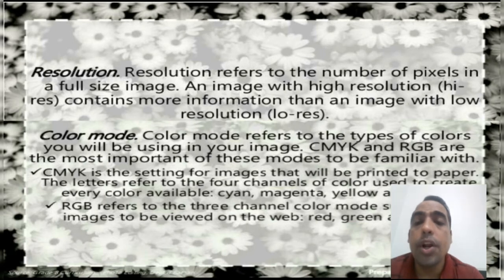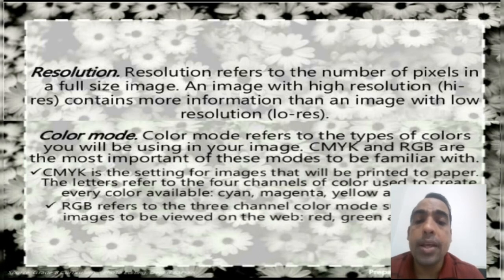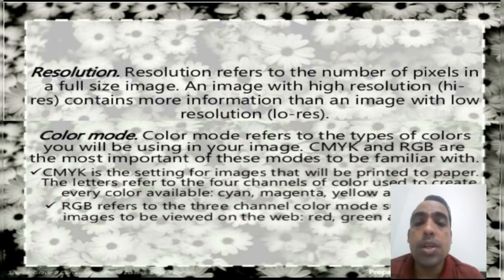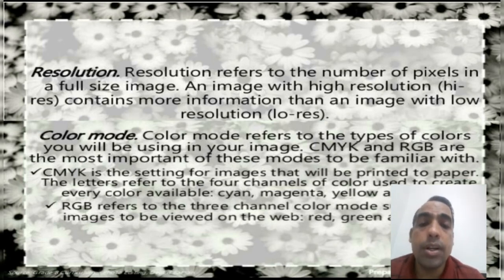Now I'll explain you what is resolution and what is color mode. Resolution refers to the number of pixels in a full size image. An image with high resolution contains more information than an image with low resolution. Color mode refers to the types of color you will be using in your image. CMYK and RGB are the most important of these modes. CMYK is the setting for images that will be printed to paper. The letters refer to the 4 channels of color: Cyan, Magenta, Yellow and Black.